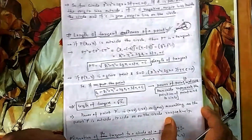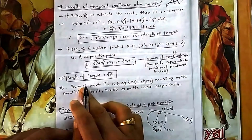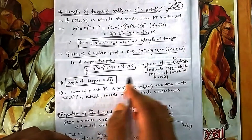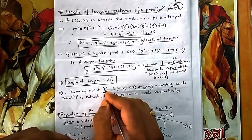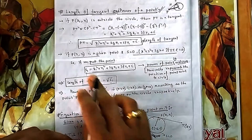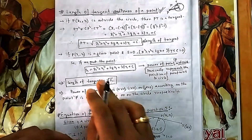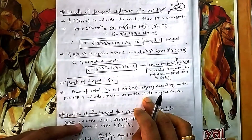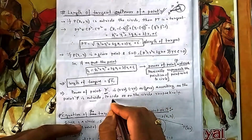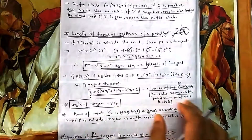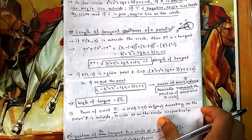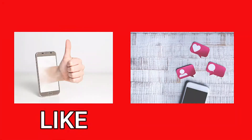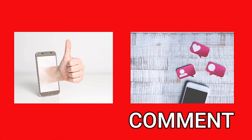Remember: S₁ is the power of the point — you put the point into the circle's equation to get S₁. The length of tangent equals √S₁. If S₁ is positive the point is outside, if negative it is inside, if zero it is on the circle. So power of a point gives you lots of useful information. If you like the video, press the like button and share your comments.